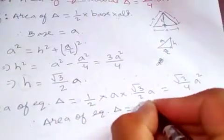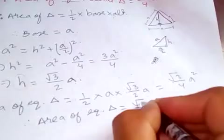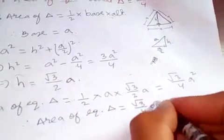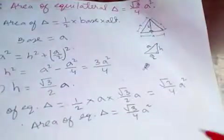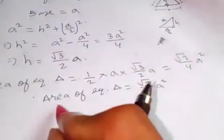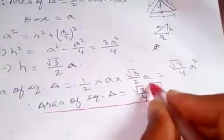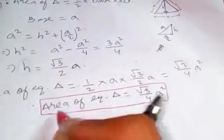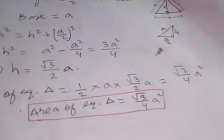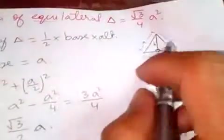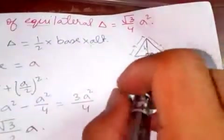So the area of an equilateral triangle is √3/4 × a². You can also find the area of a triangle using sine rule.